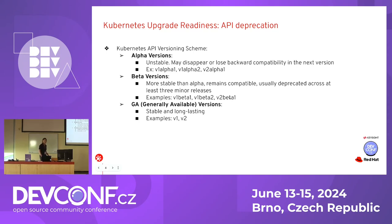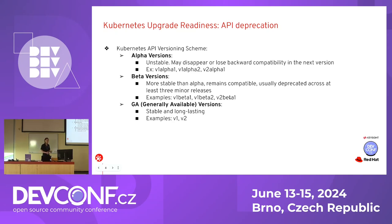Let's start with a brief discussion of the Kubernetes deprecation scheme. You have three types of APIs. Alpha versions are usually unstable — they may disappear in the next release and lose backward compatibility. Beta versions are more stable; backward compatibility is assumed and they typically survive about three releases. Then you have generally available versions, which are supposed to be stable and long-lasting.